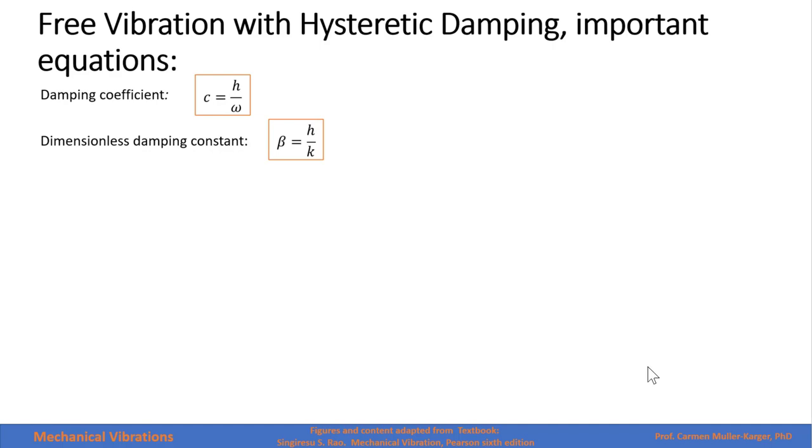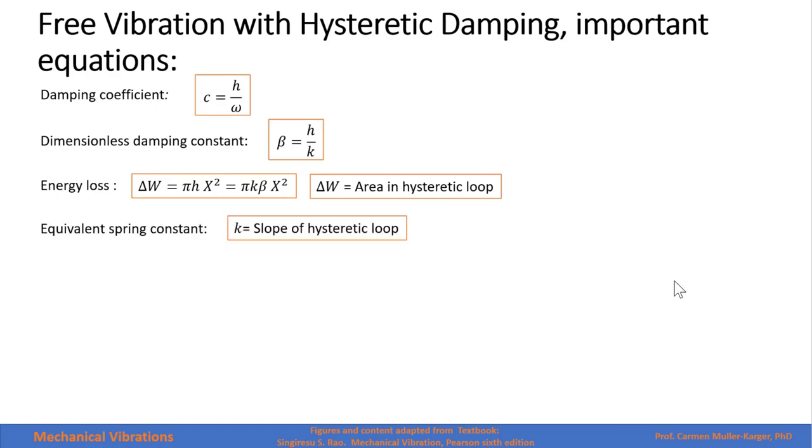The dimensionless damping coefficient, β, is defined as h over k. The energy loss for hysteretic damping is defined as πh amplitude squared or πkβ amplitude squared. And that energy loss is the area in the hysteretic loop.